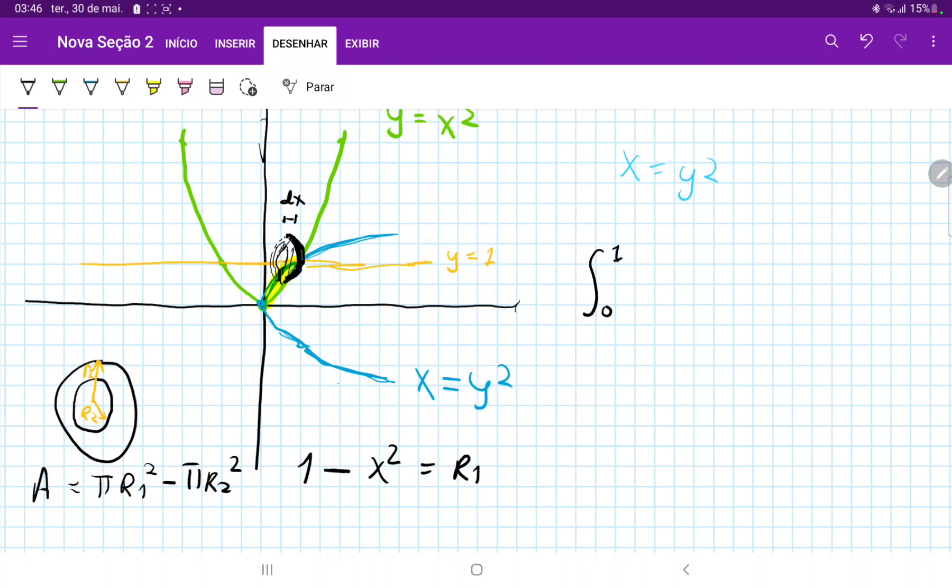What about r2? Well, first of all, we do need to express this blue curve in terms as a function of y, right? So all we're doing here is we're taking the square root of both sides, so we have the square root of x equals y, and that is our function. So once more, for this one, r2 is just 1 minus square root of x, that is our r2.